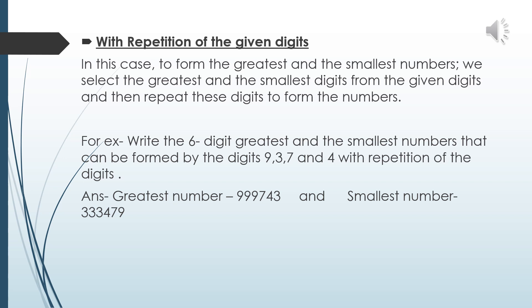For finding the greatest number, first select the greatest digit, which is 9. We repeat 9 three times because apart from 9 we already have three more digits: 3, 7, and 4. So the greatest number is 999743. For the smallest number, select the smallest digit, which is 3. Repeat 3 three times, then write the remaining digits 4, 7, 9 in ascending order. So the smallest number is 333479.